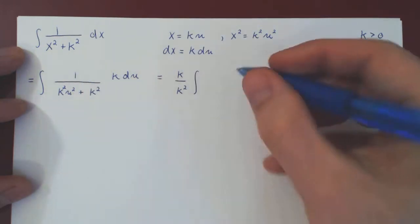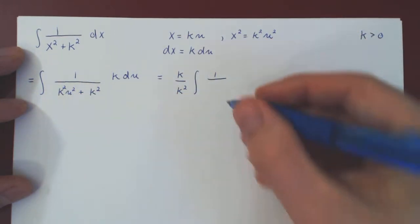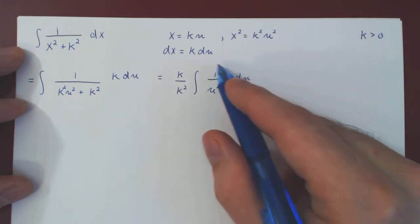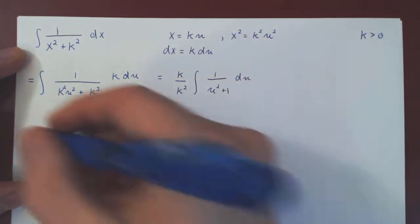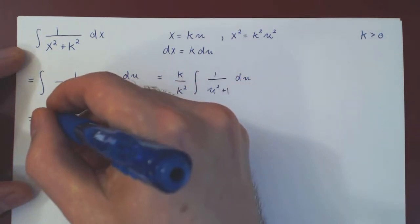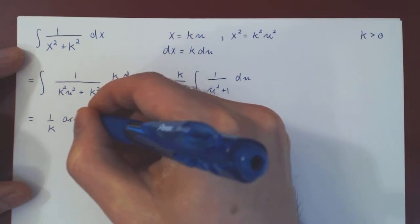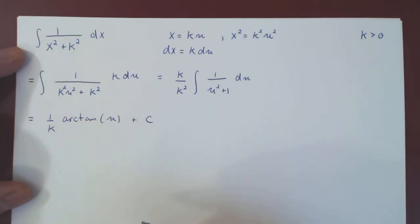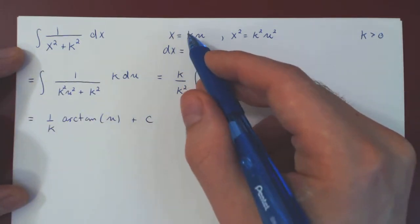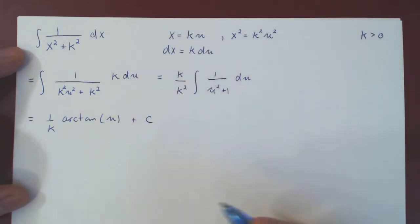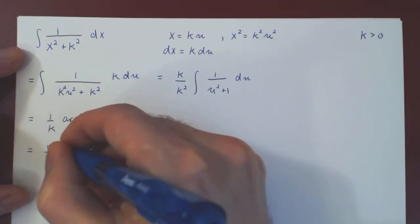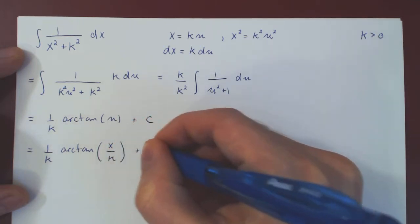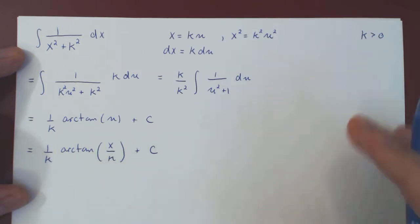And we're left with simply 1 over u squared plus 1 with respect to u. And of course, this is the derivative of arctangent of u with respect to u. So in the end, we have 1 over k, the arctangent of u plus c. And we want to return to a function of x. Well, if x is k times u, u is x over k.